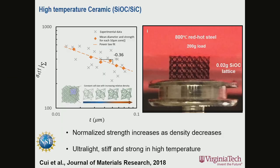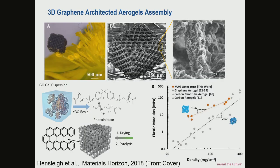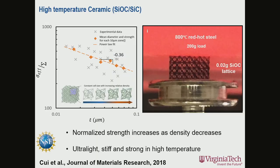Using a similar procedure, you can fabricate other types of graphene lattice structures. We synthesize graphene aerogels, disperse them into a UV-curable monomer to make graphene oxide resin, fabricate the green body, and use pyrolysis to convert it into architectured graphene. At each ligament, it contains layers of interconnected graphene sheets, and testing their mechanical properties shows they are orders of magnitude higher than conventional graphene aerogels.